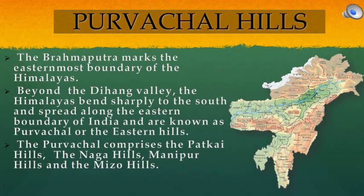The Brahmaputra marks the easternmost boundary of the Himalayas. Beyond the Dihang valley, the Himalayas bend sharply to the south and spread along the eastern boundary of India, and are known as Purvachal or the eastern hills. The Purvachal comprises the Patkai hills, the Naga hills, Manipur hills and the Mizo hills.